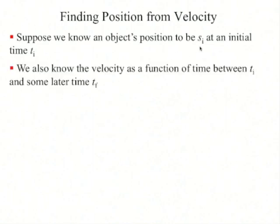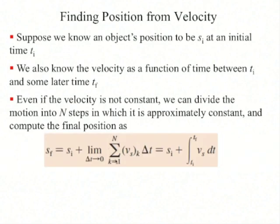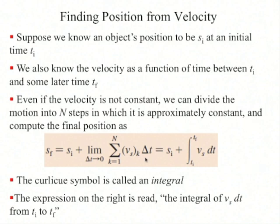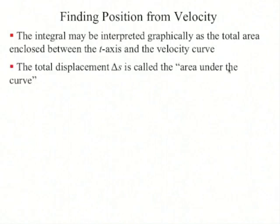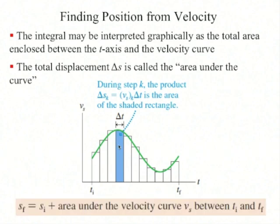Suppose we know an object's position at an initial time and also know the velocity as a function of time. Even if the velocity is not constant, we can divide the motion into n steps over which it is approximately constant and compute the final position as the limit as delta t approaches zero of the sum of the velocities times the delta t's. You can also use an integral: the initial position plus the integral from t_i to t_f of v_s dt. Graphically, the integral is the total area enclosed between the t-axis and the velocity curve — the total displacement delta s is the area under the curve.